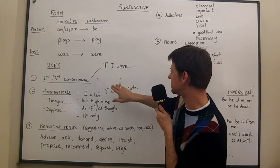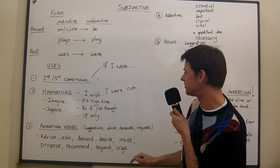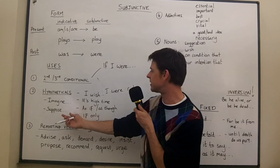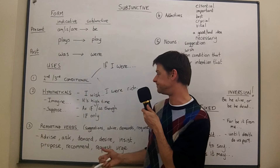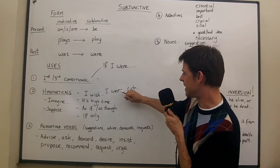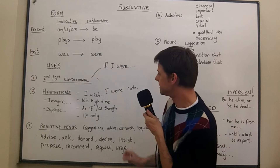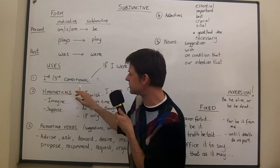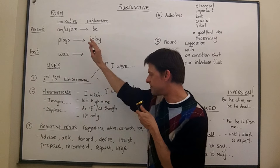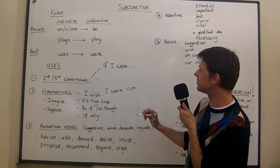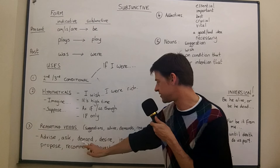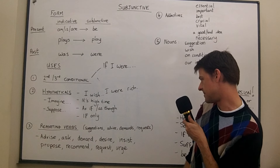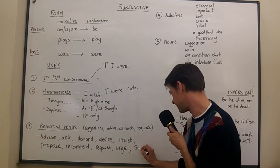The past forms you see in second and third conditional and with hypotheticals — remember these include 'imagine' and 'suppose': 'imagine you were rich,' 'suppose you were a woman and not a man.' You must use these past forms there. Now, with reporting verbs — for example: advise, ask, demand, desire, insist, propose, recommend, request, urge — and also 'suggest' — this is where you can see the present subjunctive forms.